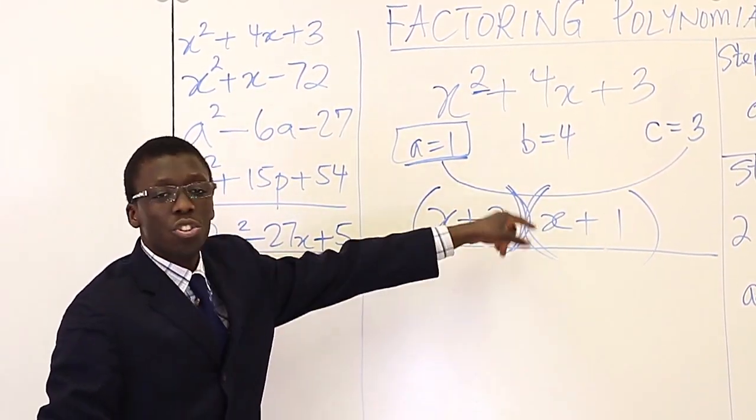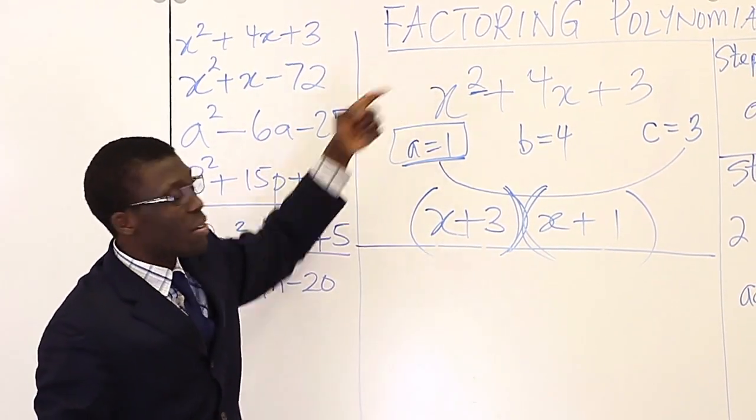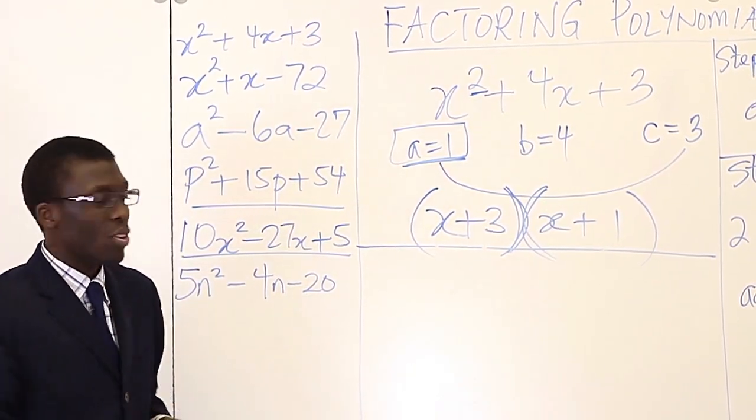We factored x squared plus 4x plus 3, and these are the factors of that polynomial. If you are to distribute, or multiply this out, you will get x squared plus 4x plus 3. So that's example 1.